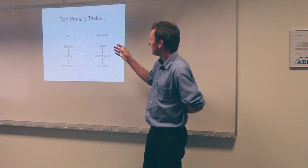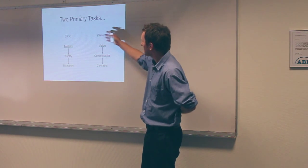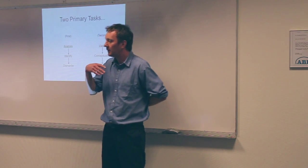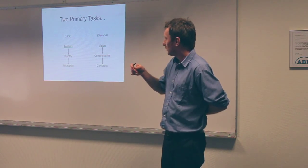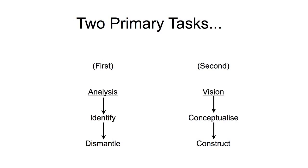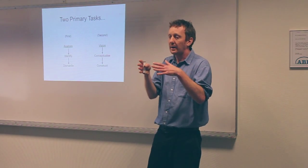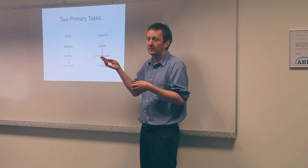So there's two primary tasks. The first is to do with analysis, and the second has to do with vision. When we're doing analysis, we're basically looking at the current economic system in order to identify the institutions within the current economy that generates the class system. And the reason we want to identify those institutions is so we can organise to dismantle them. The second primary task is vision — conceptualising new institutions for a classless economy, so we can channel our organisational energies and resources into constructing these new institutions.